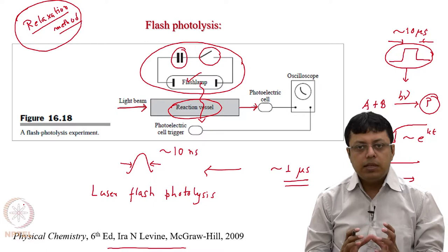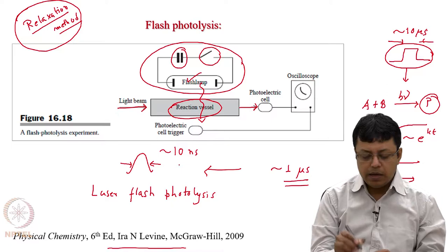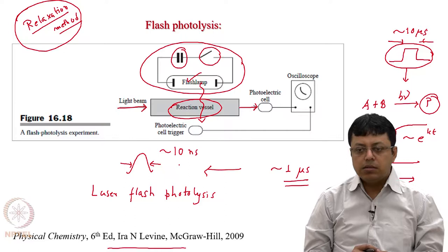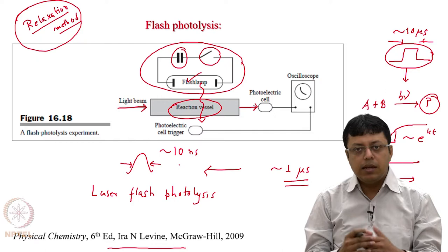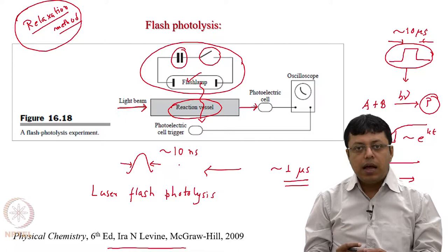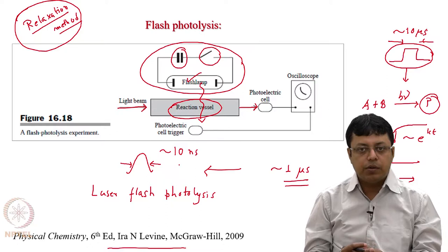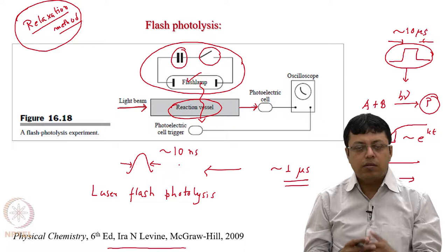The problem with relaxation methods is that the time scales are still pretty low - up to about 1 nanosecond. The reason is obvious: if we use a short pulse of light, say a laser pulse of a few nanoseconds, it initiates the process and then we watch subsequent events by absorption or emission, which we can directly see on an electronic device like an oscilloscope. However, electronics are limited to about 1 nanosecond or a fraction of a nanosecond.